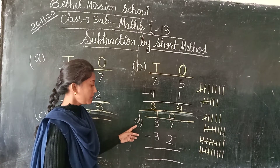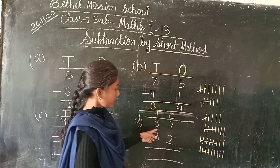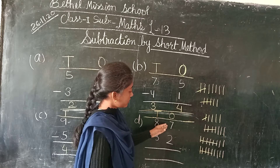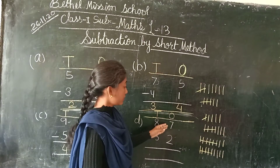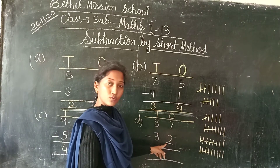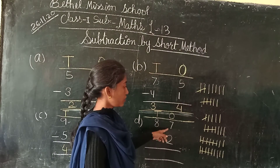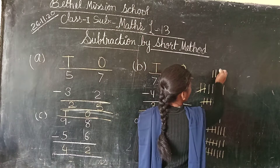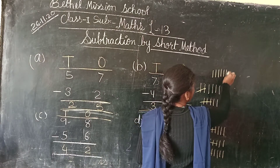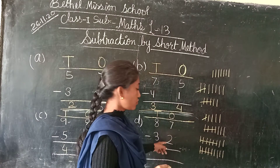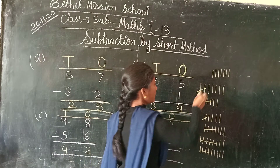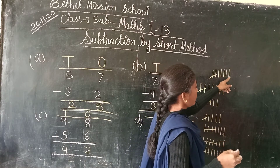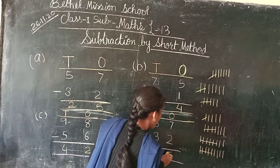We will solve the next number. We draw 7 lines: 1, 2, 3, 4, 5, 6, 7. So we have to cut 2 lines: 1, 2. How many are left? 1, 2, 3, 4, 5. So we will write here 5.